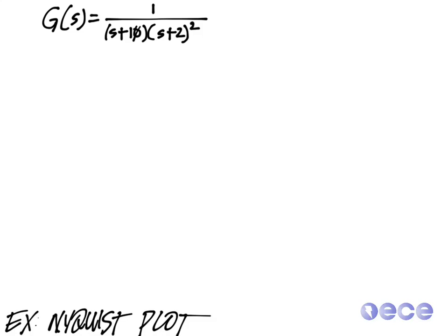Here's an example Nyquist plot. Let's look at our transfer function: 1 over s plus 10 times s plus 2 quantity squared. So I want to look at how we construct this Nyquist plot.